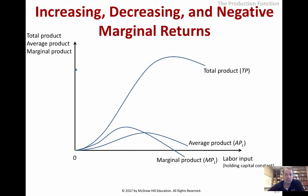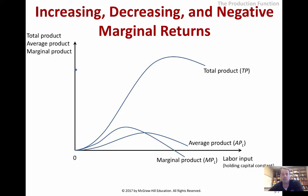Here's a graph. The total product — as we're increasing labor on the horizontal axis — would generally go up. But at some point it may actually go down if we have too many workers. The textbook assumes you're adding workers of the same quality. The average product rises for a while but then falls, and the same with marginal product — essentially driven by diminishing returns.